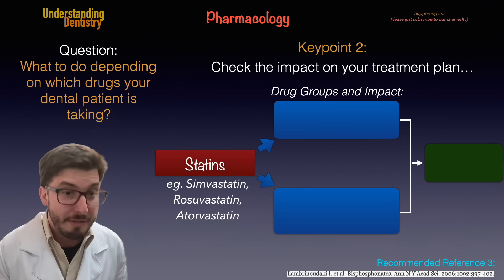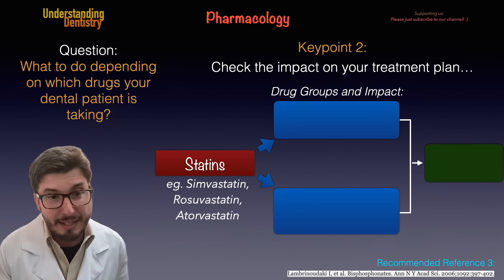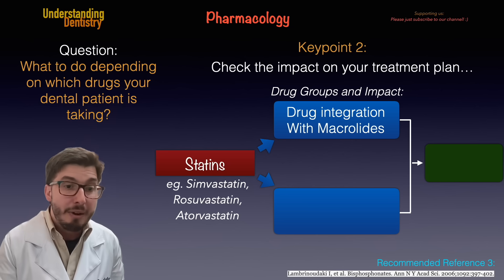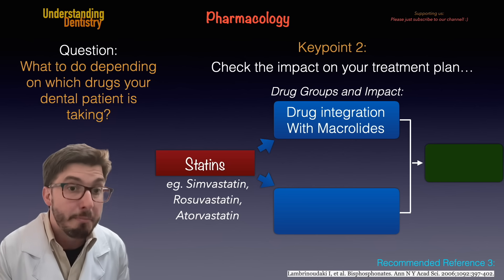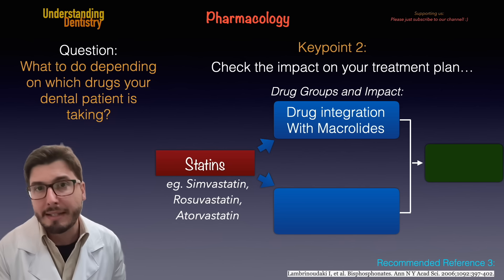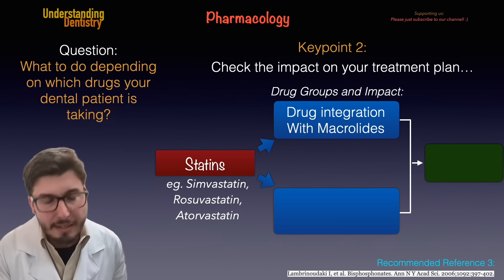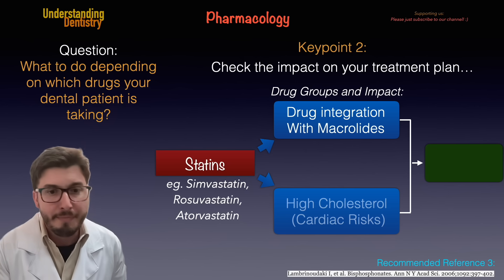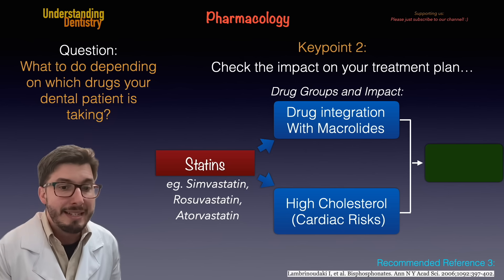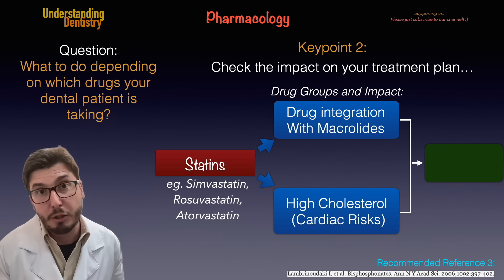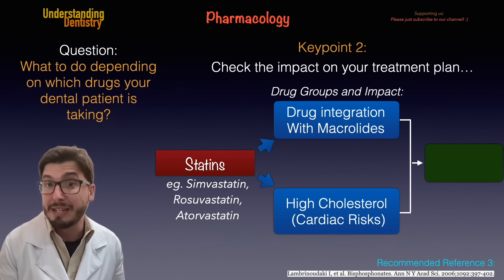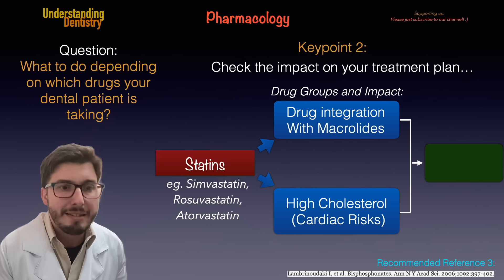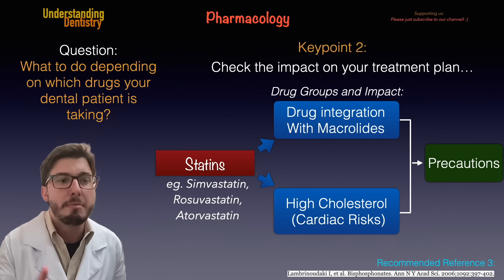Now, statins — we have simvastatin, rosuvastatin, and atorvastatin. They are used to treat high cholesterol patients. However, they might have interaction with macrolides: the antibiotic group of macrolides — clarithromycin, erythromycin, and even azithromycin. You need to make sure that you know about this interaction. And since these patients have high cholesterol, we may be talking about patients with cardiac risks, which you need to take into consideration as well. Always talk to the physician if you are not sure. That means precautions.